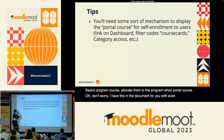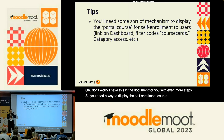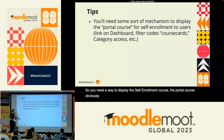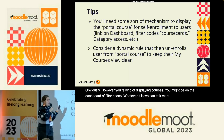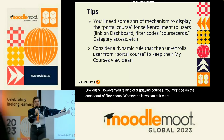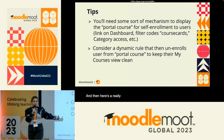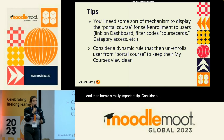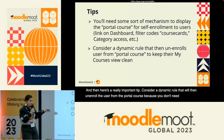You need a way to display the self-enrollment portal course — however you're displaying courses, whether on the dashboard with filter codes or otherwise. And here's a really important tip: consider a dynamic rule that will then unenroll the user from the portal course after they've been allocated, because you don't need it anymore and it will clutter up their My Courses page.